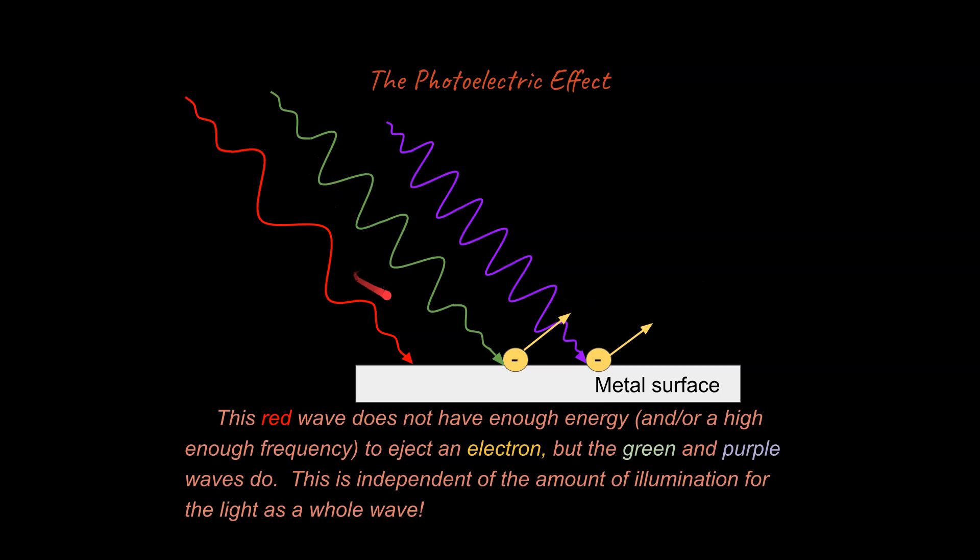Now it doesn't matter how many red waves we have. Even if we have a billion of these over a square centimeter or something like that, you still have zero electrons being kicked off. So in that sense, it really doesn't matter what the overall wave is doing. It just matters that the individual wavelet or little packet of light energy is just not energetic enough. And this is how Einstein started thinking about this, as a packet of light energy.